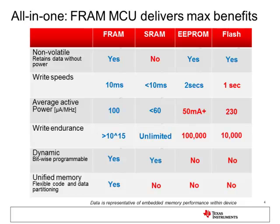A new dimension that FRAM adds is the ability to configure unified memory. A single block of FRAM can serve as either code, data, or constant memory depending on how it's configured. Flash is typically not the preferred choice for variable memory due to erase time requirements, while SRAM is not preferred for code storage due to its volatile nature. FRAM is the best of both worlds — non-volatile yet supporting fast writes similar to SRAM.